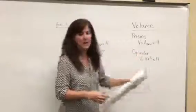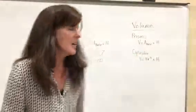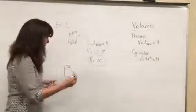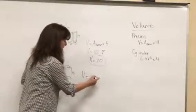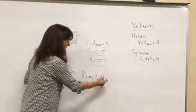So instead of the area of the base, we're going to put pi r squared times height, and we'll do a quick example that's also in your book. Volume equals pi r squared times height.